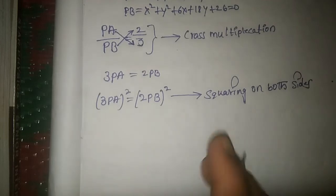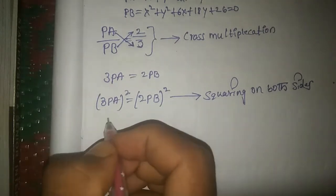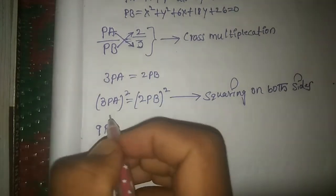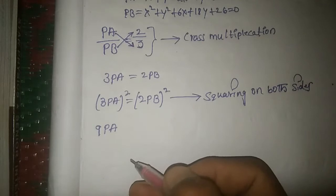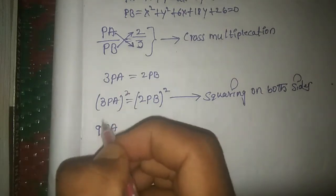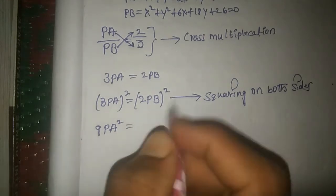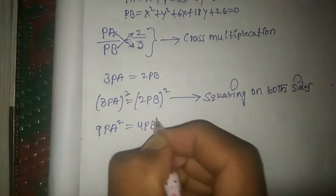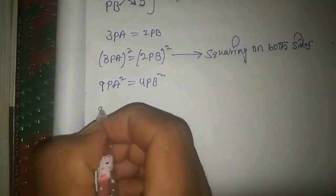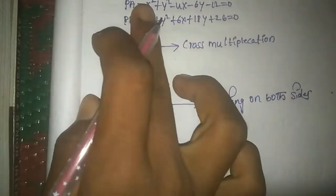Squaring both sides: (3PA)² = (2PB)², which gives 9PA² = 4PB². Now we substitute the values of PA and PB.